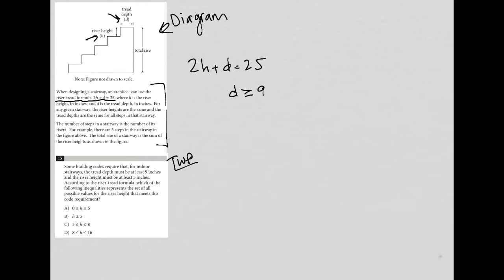And the riser height must be at least 5 inches, so H is greater than or equal to 5. According to the riser tread formula, which of the following inequalities represents the set of all possible values for the riser height that meets this code requirement? The code requirement is basically here. It has to fit the riser tread formula and we need values of D that are greater than or equal to 9 and values of H that are greater than or equal to 5 simultaneously.